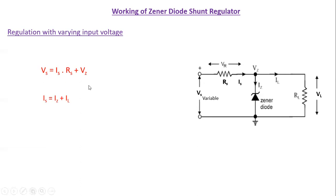Now we can see the two equations which we have written earlier regarding the voltage and the other parameters in the circuit. One is: supply voltage VS is equal to the voltage across the series resistance RS, that is IS times RS, plus the voltage across the Zener diode VZ. The second equation is: the current IS is equal to the current IL plus IZ.